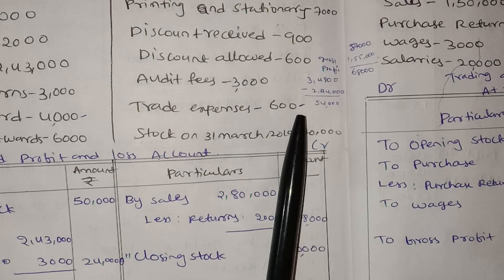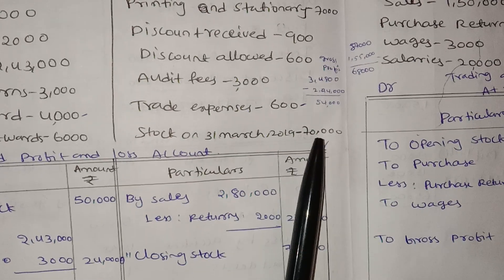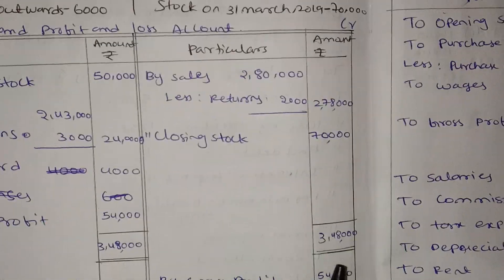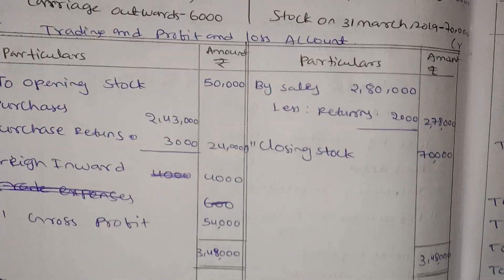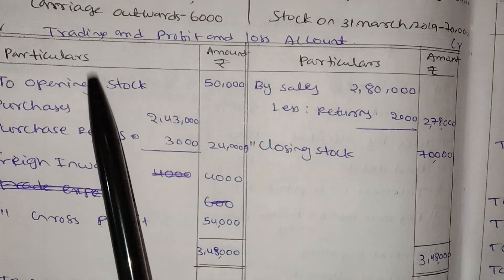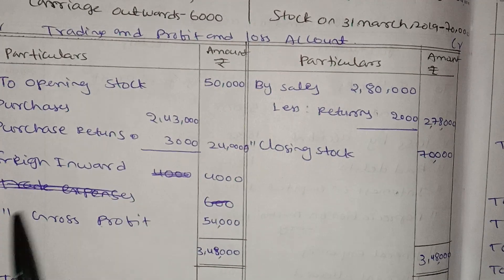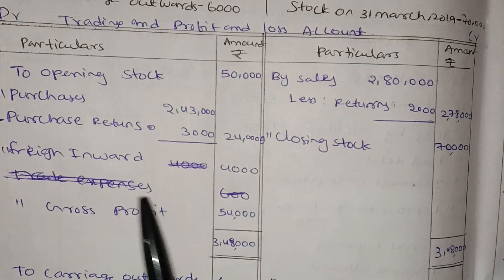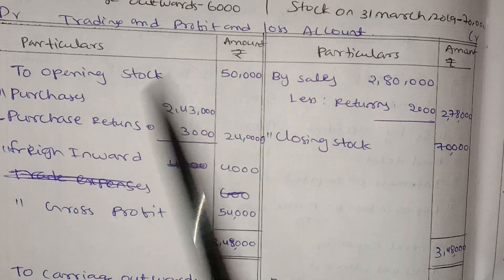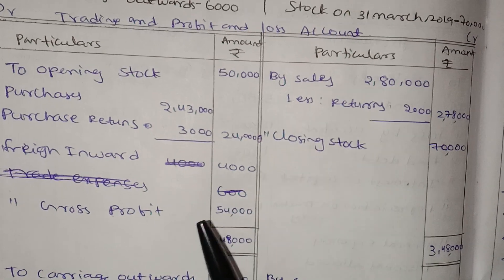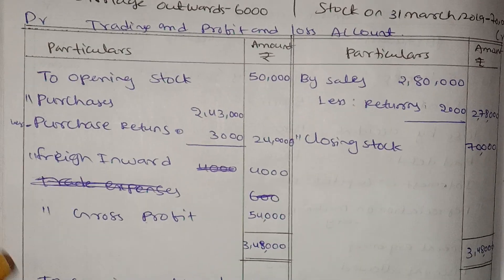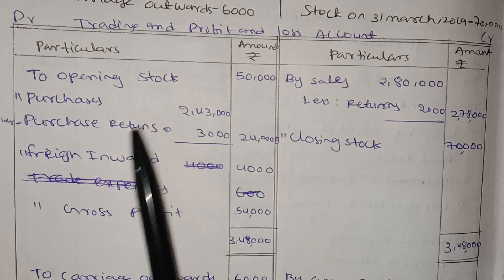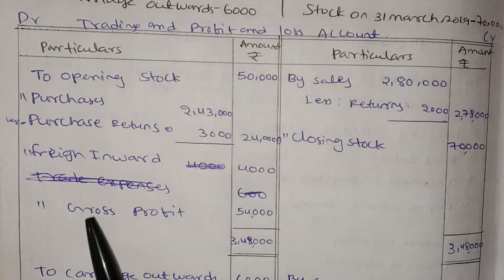Okay, the closing stock is $70,000. Now what is the case for this? This is gross profit. Next, where is the sales? Here.